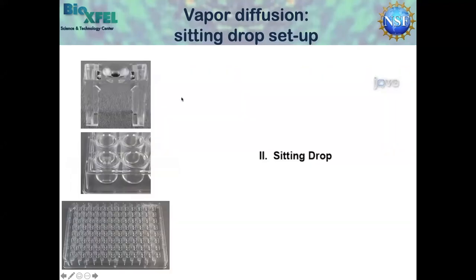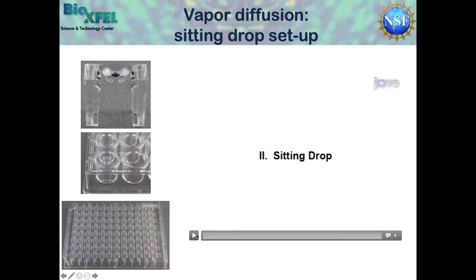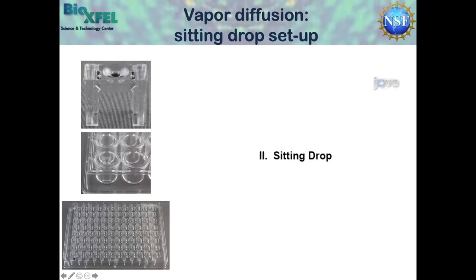Here, what we're going to look at is a sitting drop setup. It's very similar in setup, except now we have this micro bridge. You basically set these inside those 24-well plates, then do the exact same thing. Here is an example of another tray — this is a 96-well tray that has two sitting drop indentations and then a reservoir solution next to it. Each of these wells is its own individual experiment.